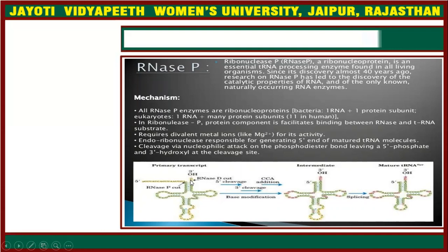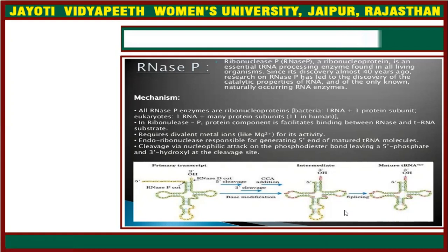RNase P RNA will bind to this region, and it requires divalent metal ions like Mg2+ for its activity. Using the RNase P cleavage activity, they will add a CCA loop, and by this CCA loop, mature tRNA will be able to bind to another group. In the RNase P method, a mature tRNA is a spliced tRNA that does not have any excess regions — it is used for the removal of excess tRNA parts.